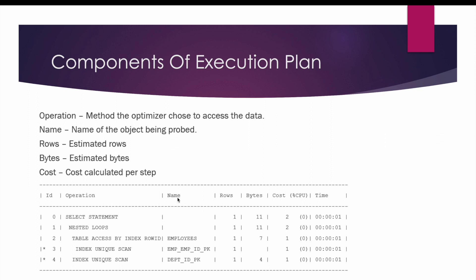The next component is name. It basically shows the name of the object on which the specific operation is being performed. For example, operation number two — table access by index row ID — is performed on the employees table.